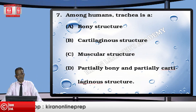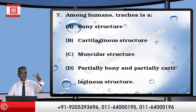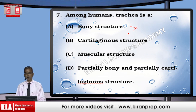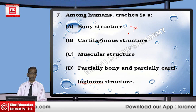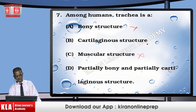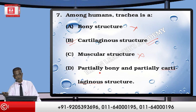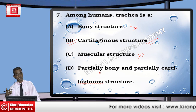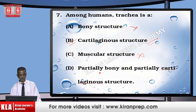Question: Among humans, the trachea is which type of structure — bony, muscular, cartilaginous, or partially bony? It cannot be bony because bone is hard and cannot contract and relax as air passes in and out. Muscles normally attach to bones or line body parts, they don't form complete organs on their own. Partially bony means 50-40 percent bone, but that is not the case. The correct answer is cartilaginous — the trachea is made up entirely of cartilages, not bone.